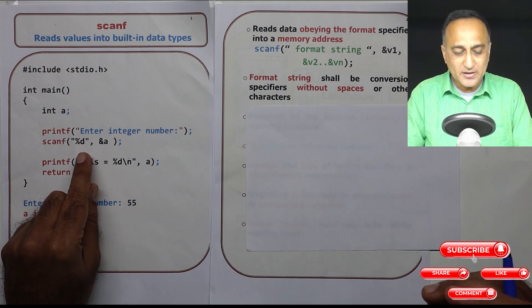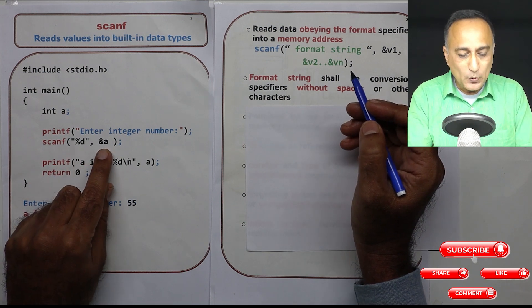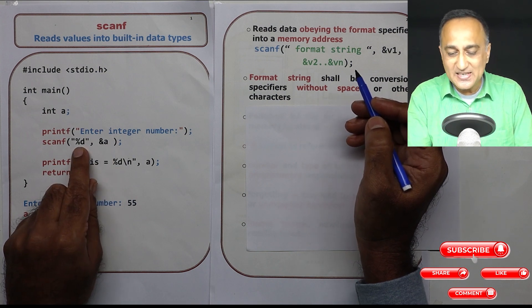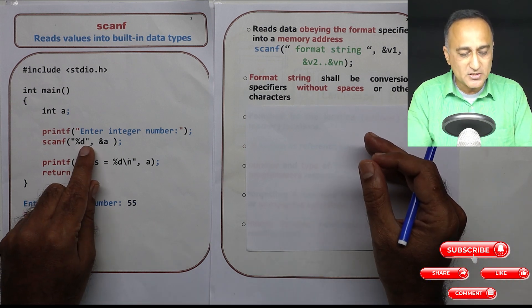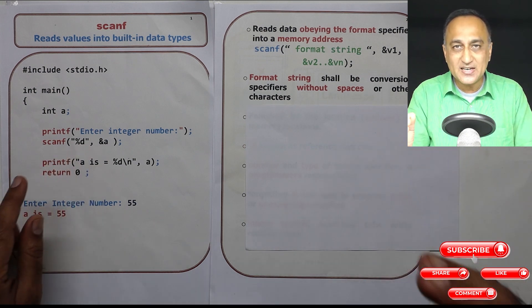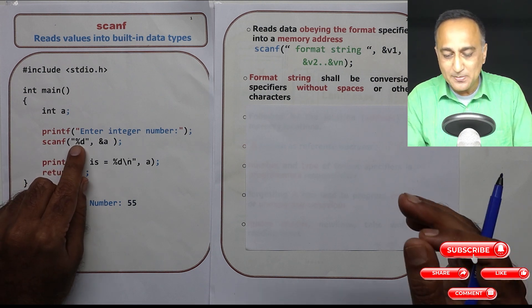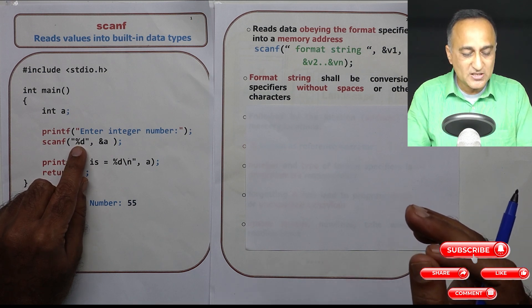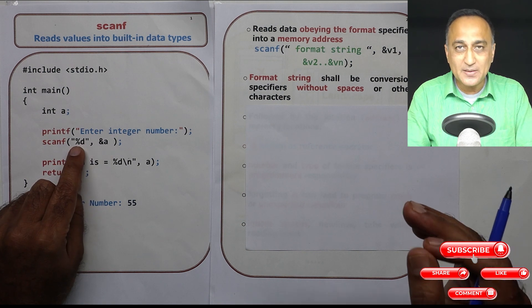So what scanf is trying to tell is read a value into the memory location where a stays, and %d is nothing but the format string or the control string. Anything between double quotes is the control string or the format string. %d simply is the specification or the control specification which says that a should be of the integer type of data.